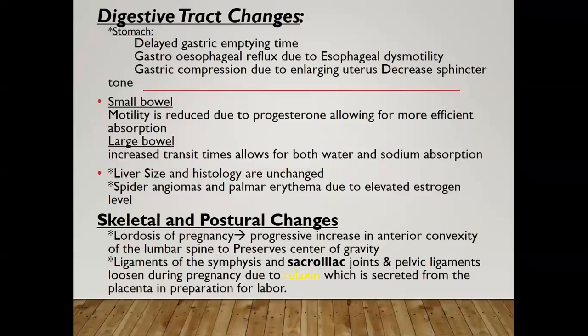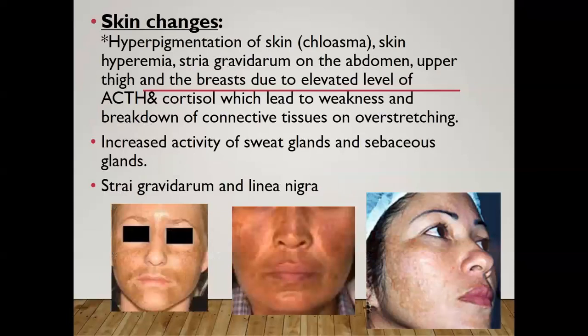Regarding the skeletal and postural system, there is lordosis of pregnancy. The pregnant body will have more lordosis, increasing the anterior convexity of the lumbar spine to preserve the center of gravity for balance in walking and standing. The ligaments of the symphysis, sacroiliac joints, and pelvic ligaments become more loosened during pregnancy due to the effect of relaxin, allowing mobility of the joints and vertebrae. Relaxin is secreted first from the corpus luteum and then continues from the placenta.